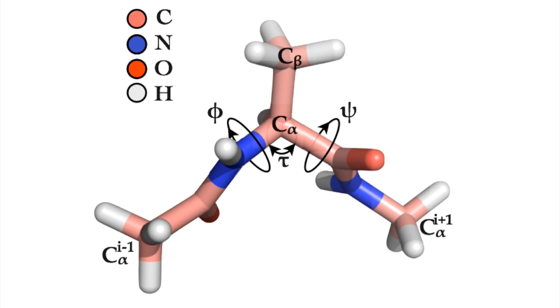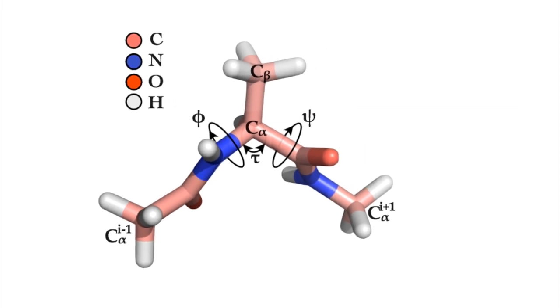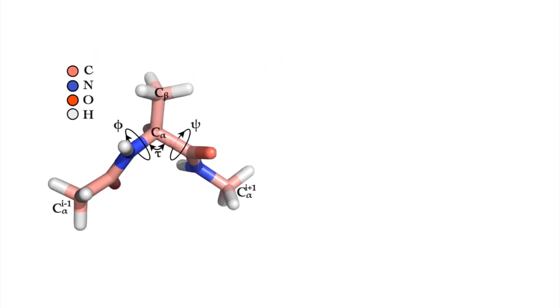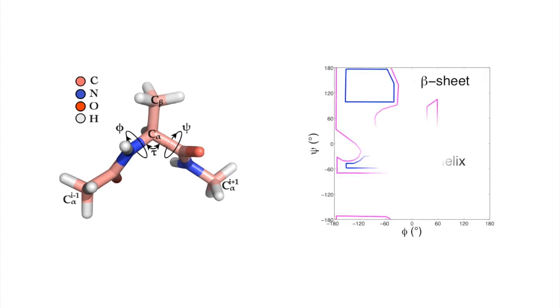The position in phi-psi space that an amino acid takes is what we call its backbone conformation. Generally speaking, there are two major regions in phi-psi space that a dipeptide can explore: the so-called alpha helix and beta sheet regions.